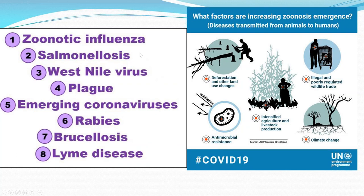This is the list for zoonotic diseases: influenza, Salmonella, West Nile, plague, emerging coronavirus, rabies — we are one of the largest countries after South Africa with the highest number of rabies cases — brucellosis, Lyme disease. Everything starts from deforestation, then illegal and poorly regulated wildlife. That's why these all start from China, because the proximity between animals and humans is decreasing. Intensified agriculture, livestock production, and particularly free-ranging animals in India are a major factor, and climate change is at the root of all this — less water, drought, flood. This is a very complex arena.